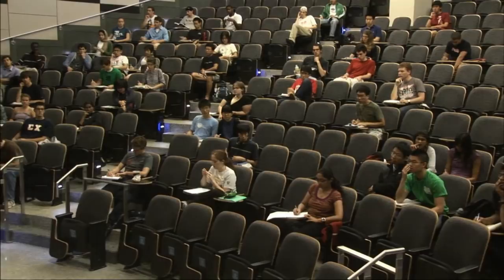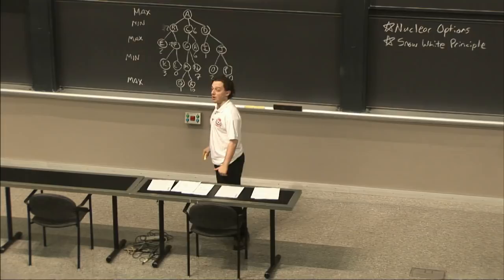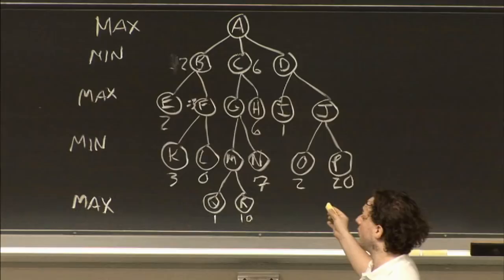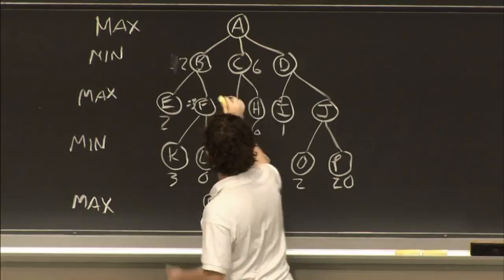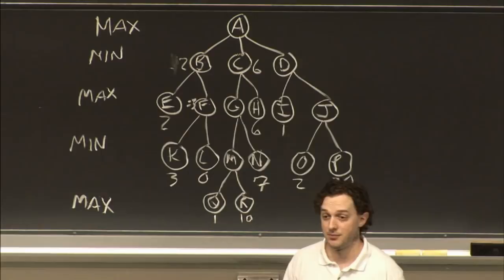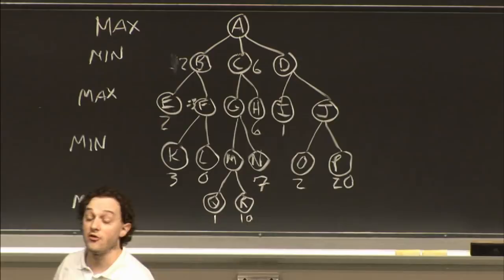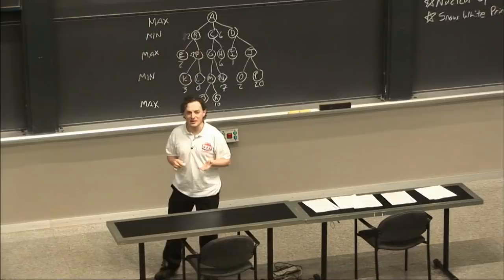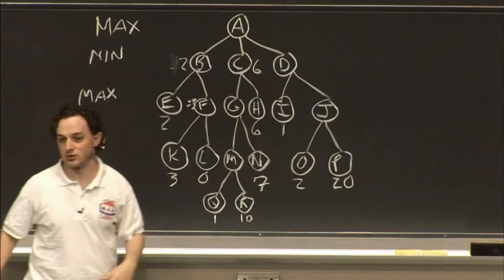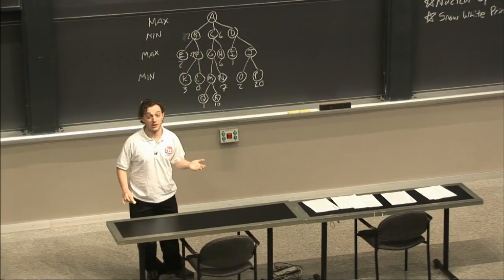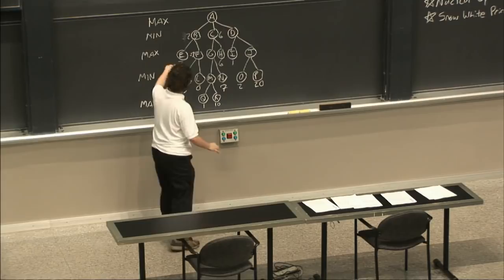The question was: when you do Minimax and you've got E equal to 2, knowing B is going to be less than or equal to 2, but you don't know F yet — do you go down the tree, find the value at F, and then go back up? The answer is yes. By default we use a depth-first search. However, in the non-alpha-beta version — just regular Minimax — it probably doesn't matter what you do. I suggest doing depth-first search to get yourself in the mindset of alpha-beta, because order is very important in alpha-beta.